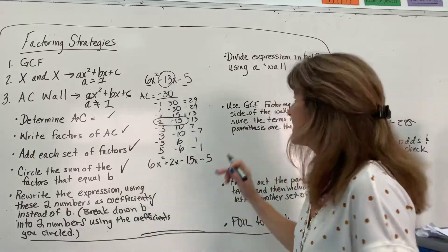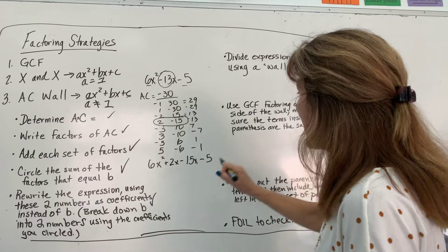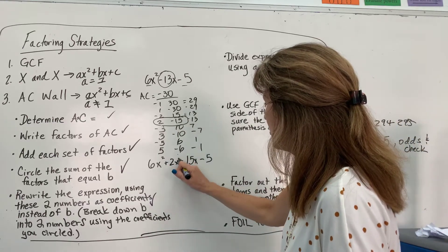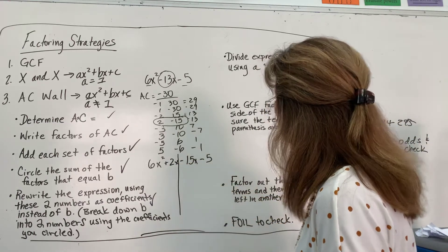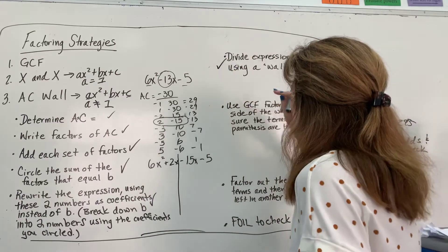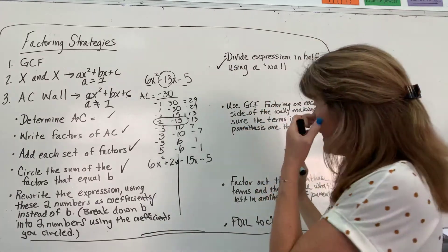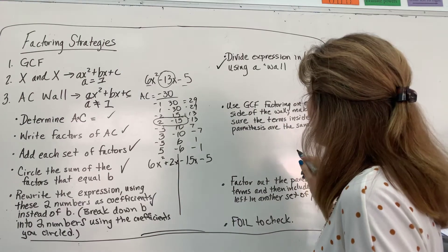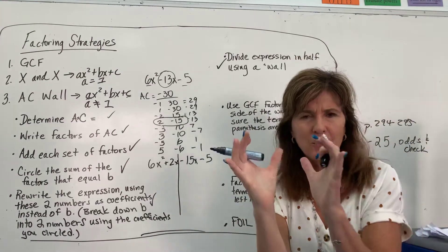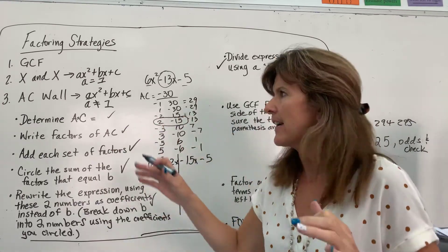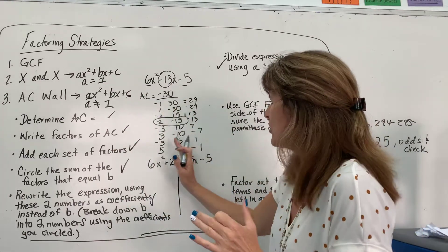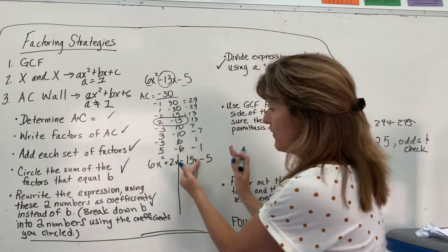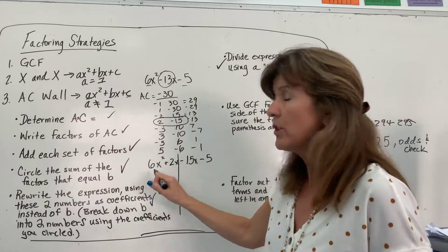I'm going to push this back. Okay. So, I did that. I just rewrote it. Once I figured out the two numbers, I rewrote it. It said negative 13x. I wrote 2x and negative 15x. So, divide expression in half using a wall. Two terms here, two terms there.